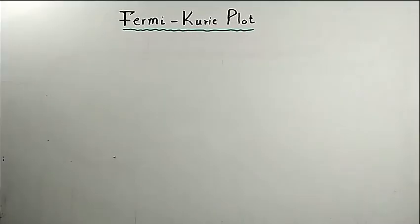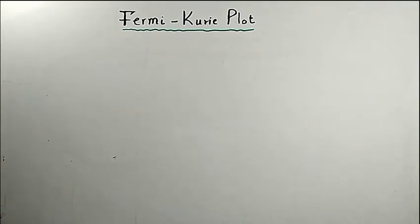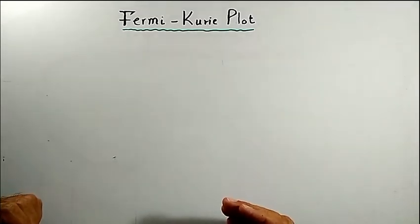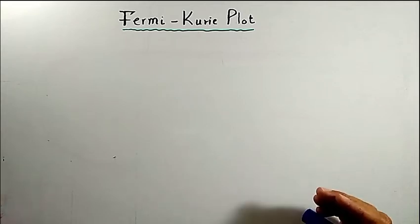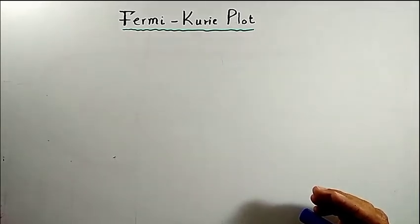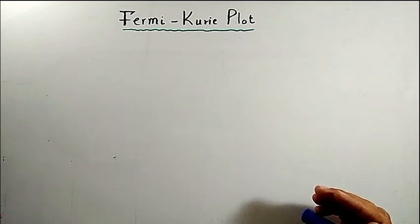In this lecture we talk about the Fermi-Kurie plot. The reason we discuss it is that if we want to predict whether any transition or beta disintegration is in accordance with Fermi theory, we can do so by the Fermi-Kurie plot. If the Fermi-Kurie plot between two quantities is a straight line, then that transition is an allowed transition. For forbidden transitions or forbidden decays, the Fermi-Kurie plot will be a distorted curve.